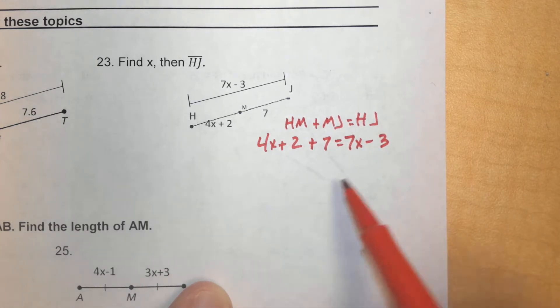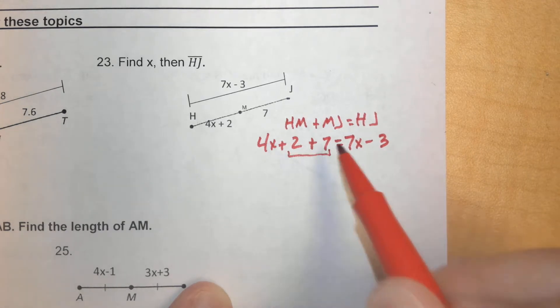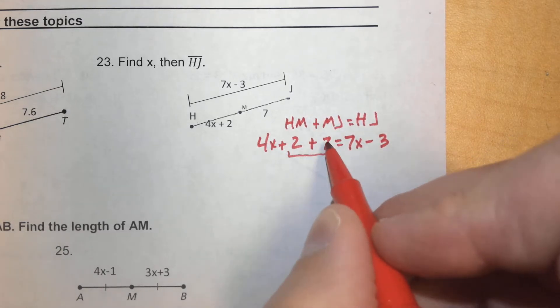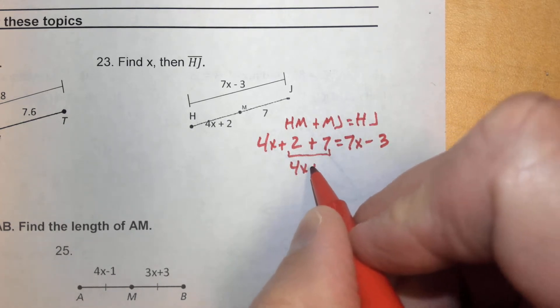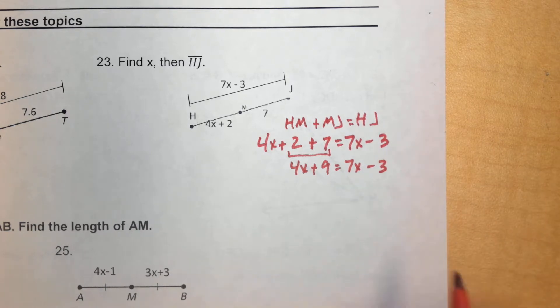Before we start moving anything around from one side of the equal sign to the other, we want to make sure that we combine any like terms that we have on either side of the equation. In this case, we have 2 and 7 that we know. We can combine those into 9. So, we have 4X plus 9 on this side equals 7X minus 3. And now we can start moving things from side to side to solve from here.